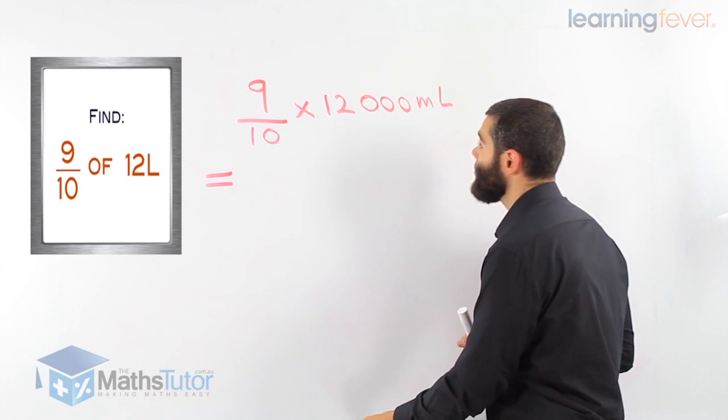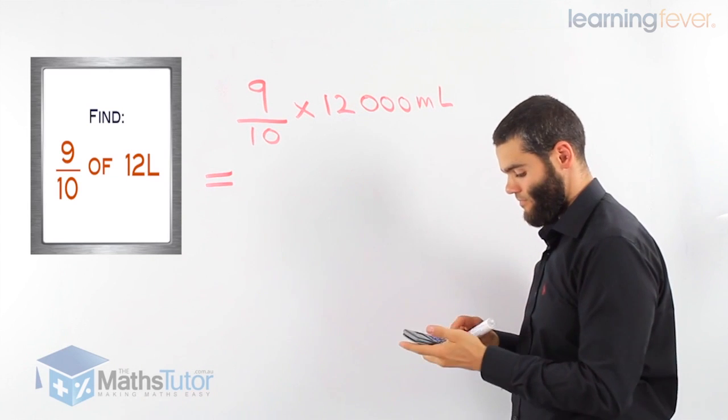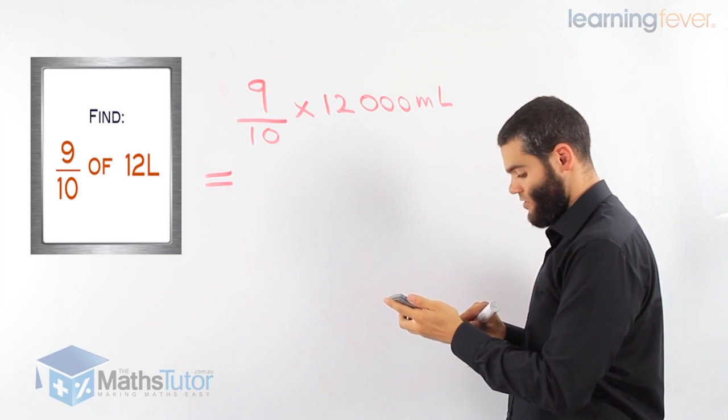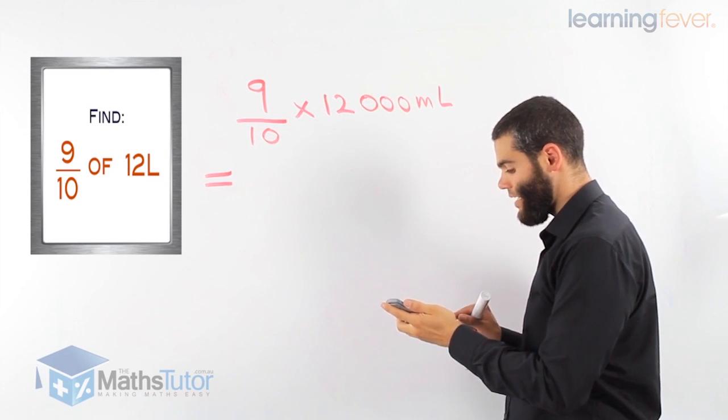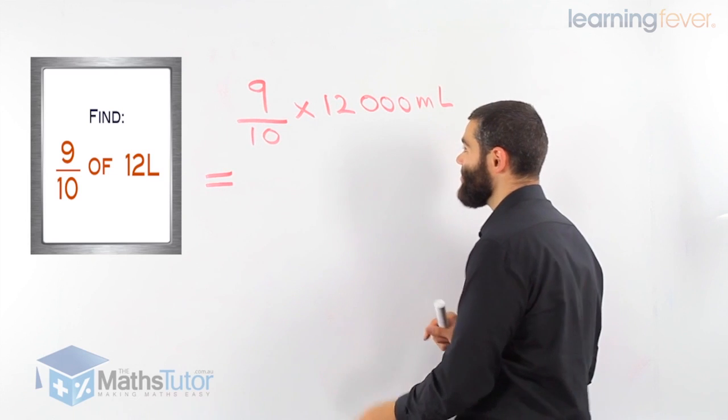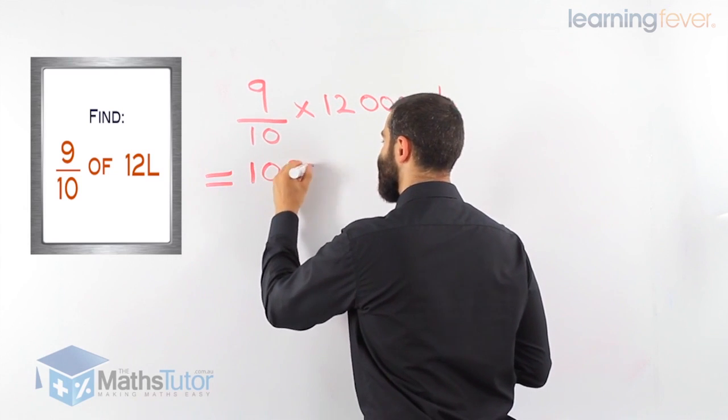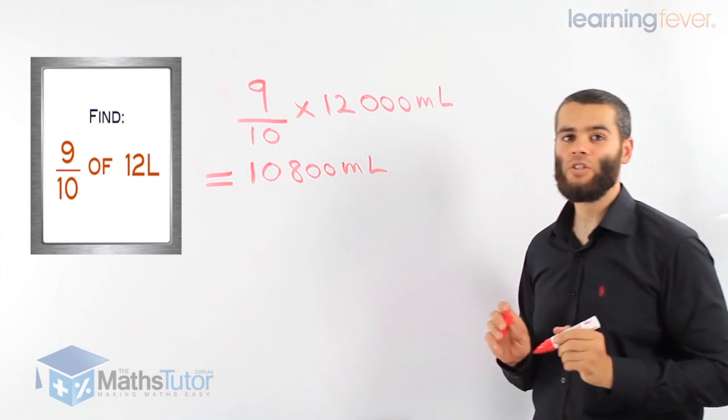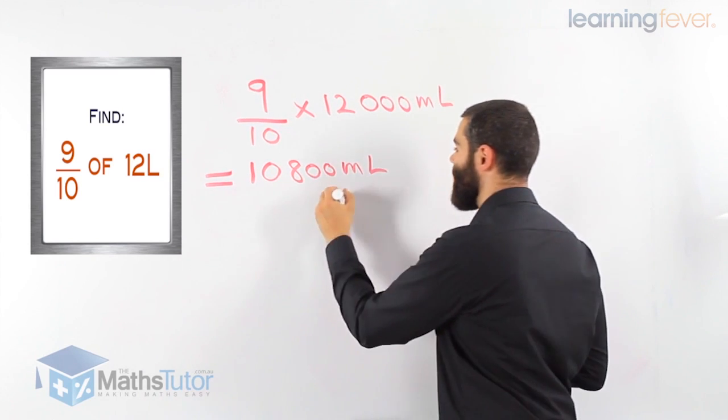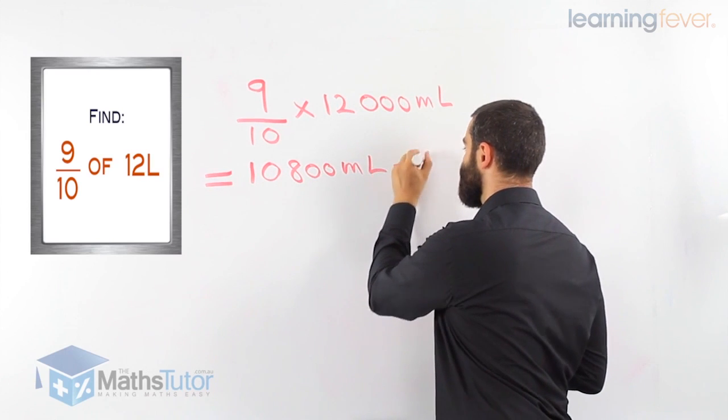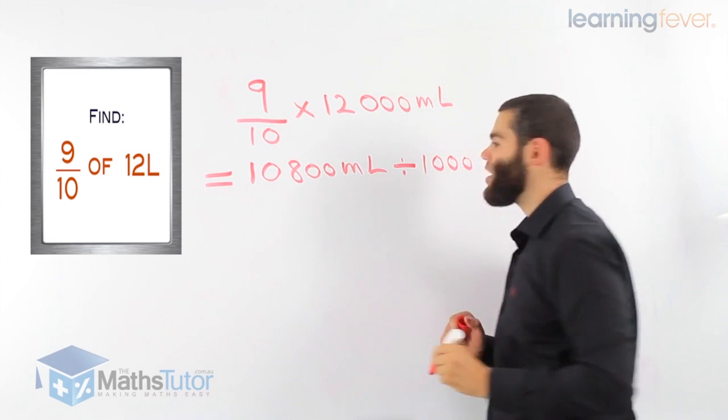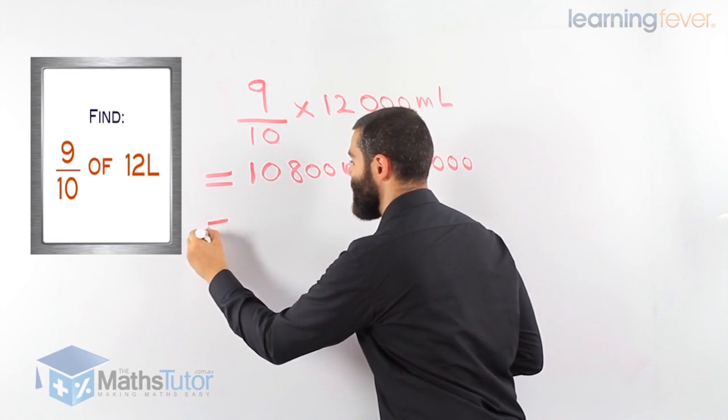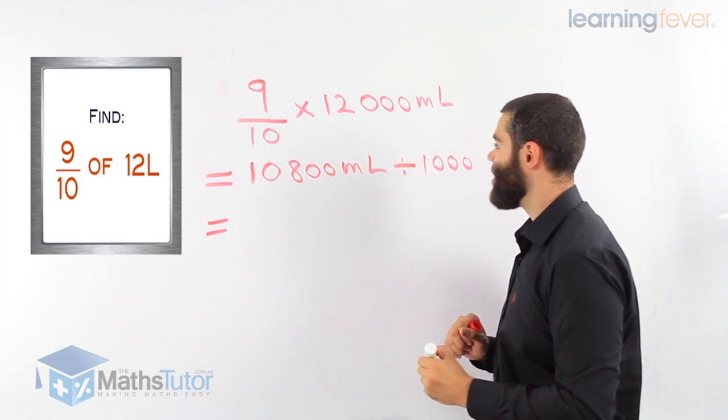Again, grab your calculator. 9 over 10 times 12,000 millilitres: 10,000 and 800 millilitres. Now, if we want to change that to litres, we know the rule is to divide by 1,000 to change from millilitres to litres.